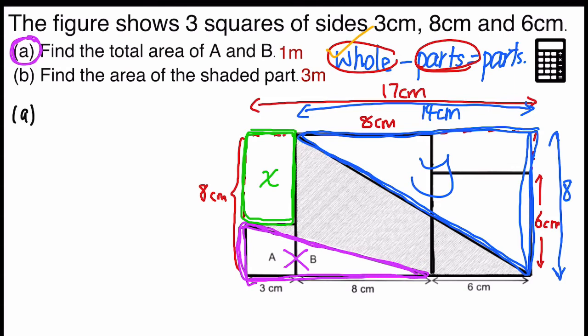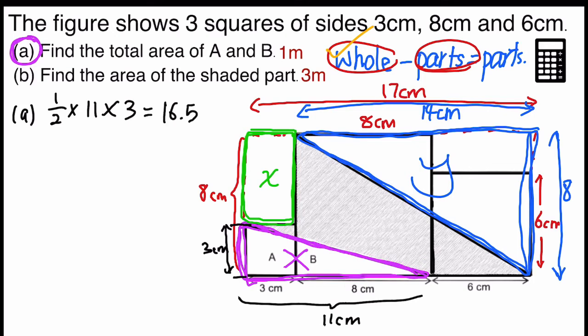Okay. So, A. Find the total area of A and B. So, the height here is the length of the square, which is 3 centimetres. So, applying the formula to find triangle. Half times base. The base is 8 plus 3, which is 11 centimetres. So, half times 11 times 3. And since you can use the calculator, the answer is 16.5. You should have no problem doing the first part of the question.